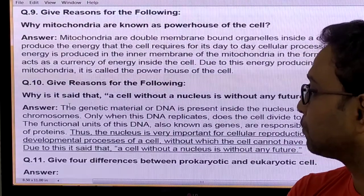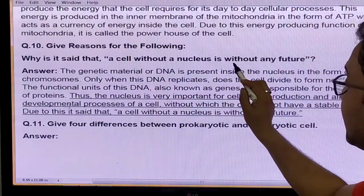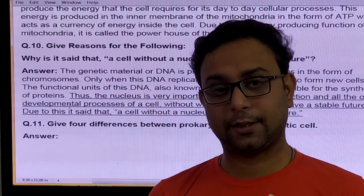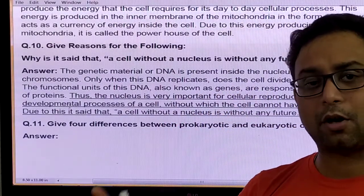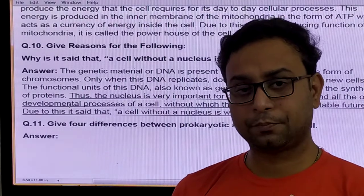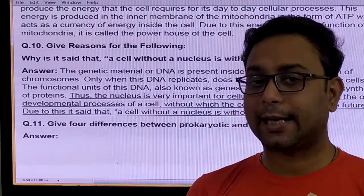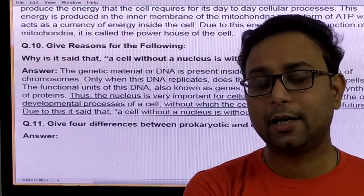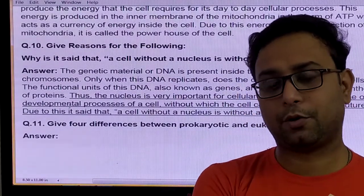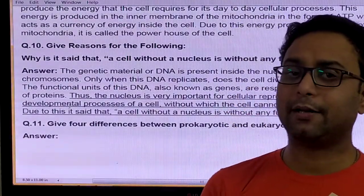Question: Why is it said that a cell without a nucleus is without any feature? Because the nucleus is the brain of the cell — it controls all functions. Without the nucleus, cell functions cannot be regulated or controlled. Also, mRNA is produced in the nucleus, and from mRNA, protein synthesis happens. If the nucleus is absent, mRNA is not produced, so protein is also not produced. Without protein, the cell cannot survive. So without the nucleus, neither plant nor animal cells can survive.